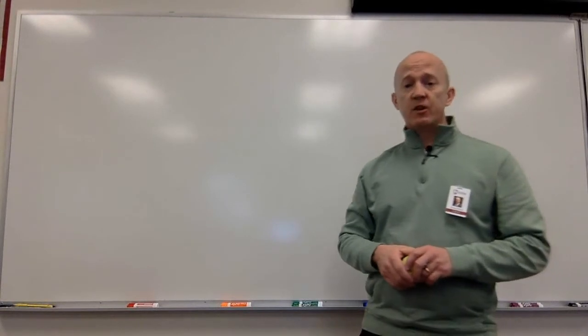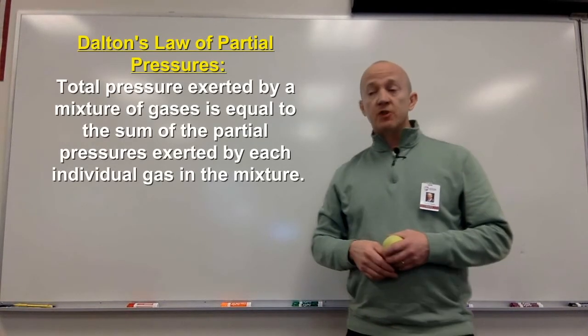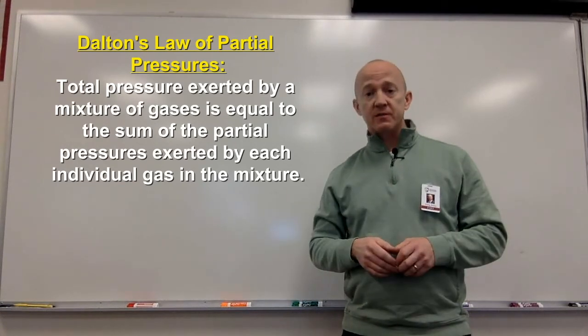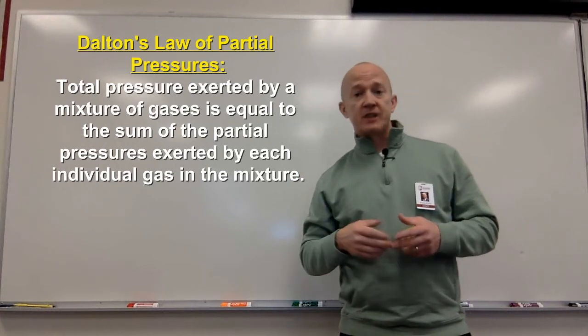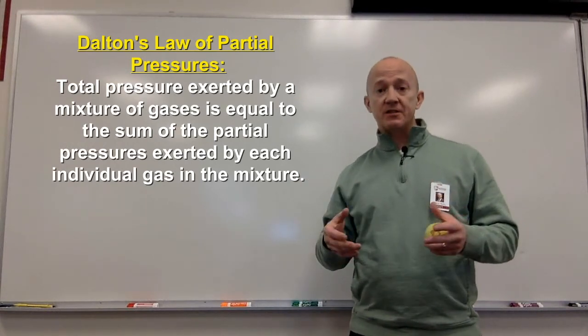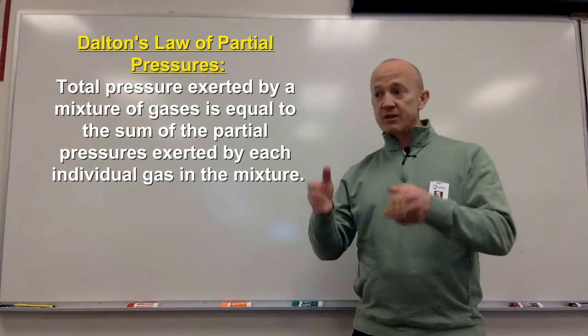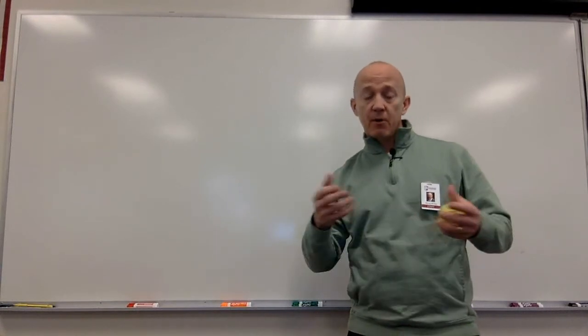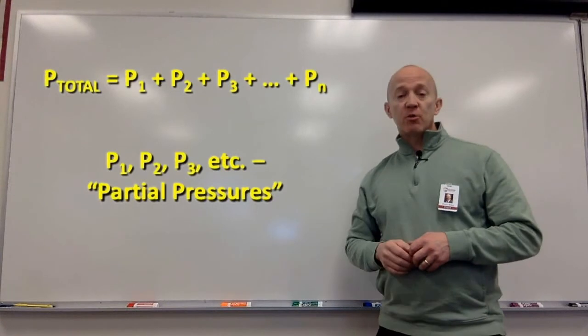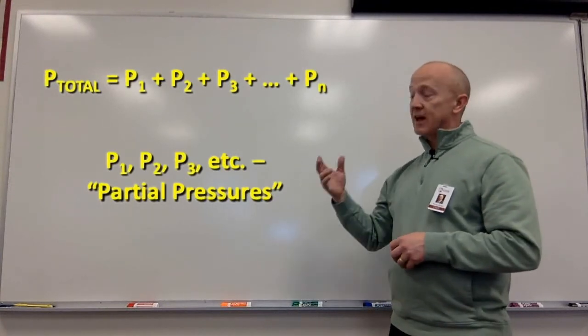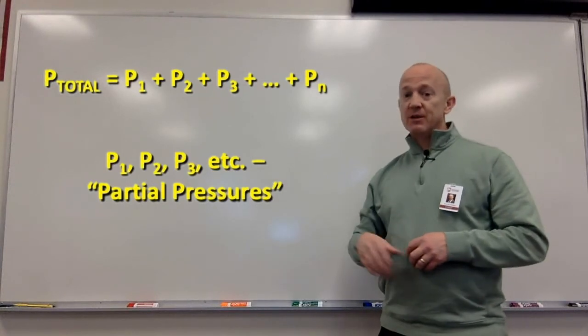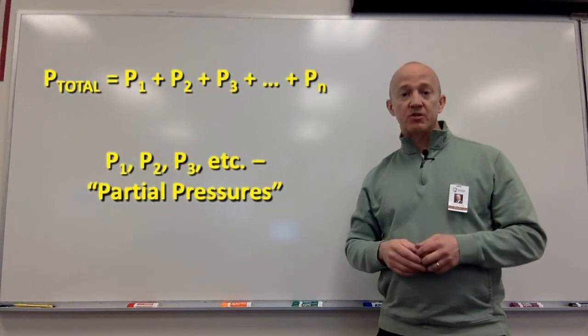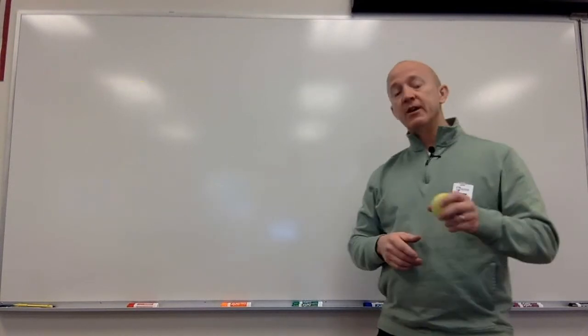The last concept for this video is that of Dalton's Law of Partial Pressures. Dalton found that each gas in a mixture of gases will exert pressure independently of the other gases present. Therefore, Dalton's Law of Partial Pressure states that the total pressure in a mixture of gases is equal to the sum of the pressures of the individual gases. The portion of the total pressure that a single gas exerts is called a partial pressure. We can express it this way. The total pressure of a mixture of gas is equal to the pressure of gas 1 plus the pressure of gas 2 plus the pressure of gas 3. You get the idea. However many gases there are in that mixture, you just add their pressures together to get the total.